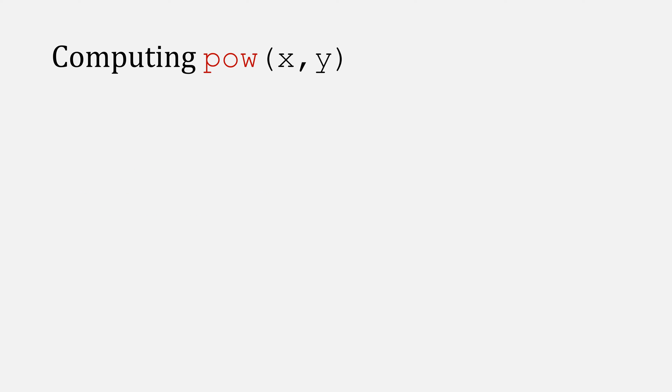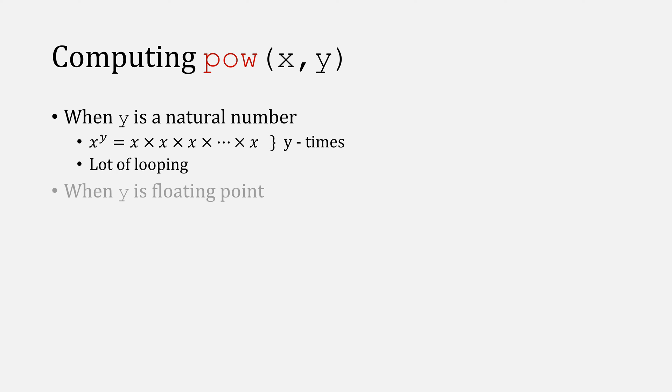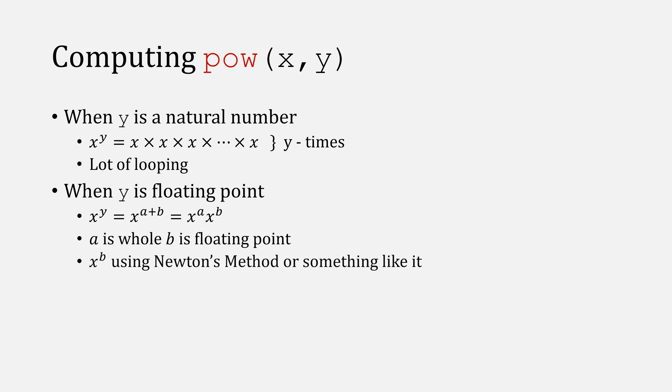On first glance, you might think the power function just does a lot of looping if y is a natural number. And then if it was a floating point number, using properties of exponentials, you might split it up and use something like Newton's method on the fractional part. If it was a negative number, then you just do 1 over the exponent. Or you could use logs, and that's what the power function actually does.